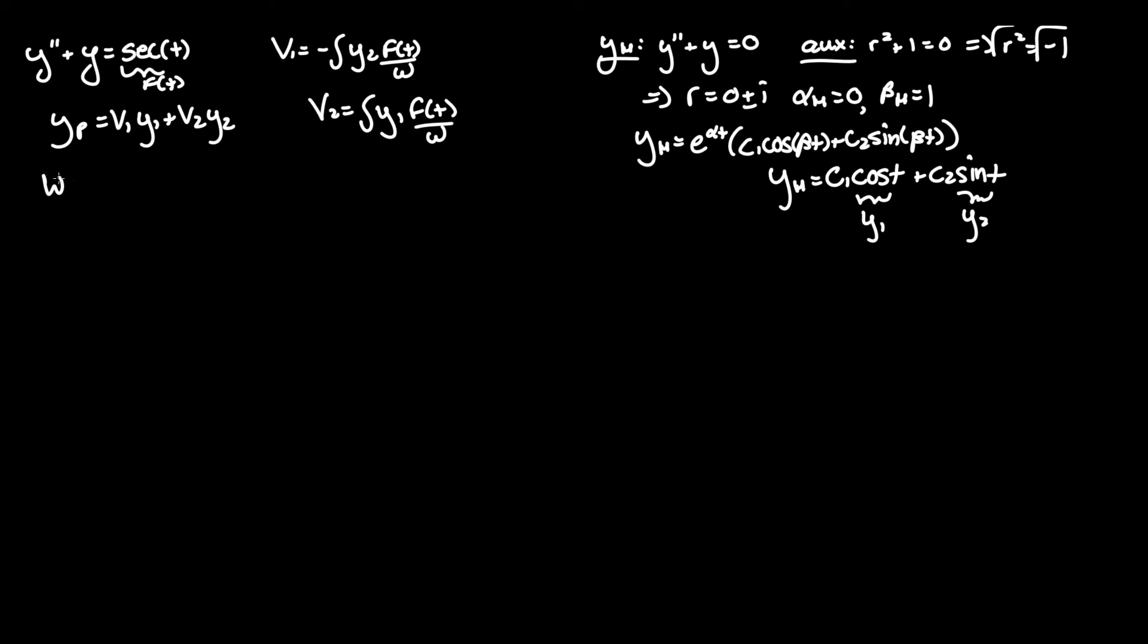If you know from linear algebra, Wronskians are used to find out whether or not two functions are linearly dependent, so you need to take their derivatives and then the determinant equals y1 y2 prime minus y1 prime y2.